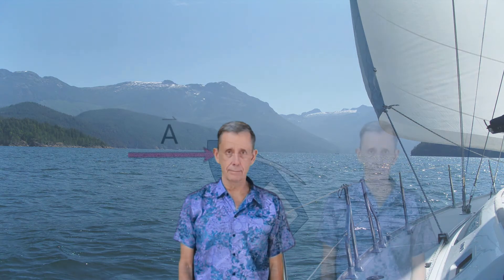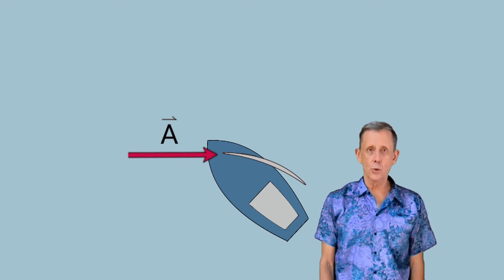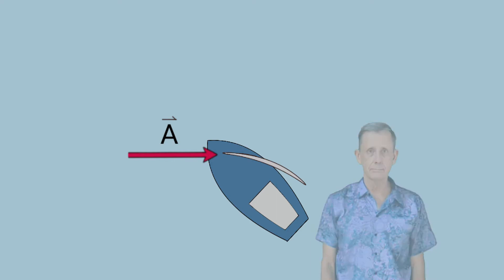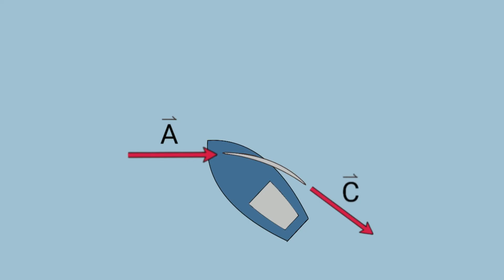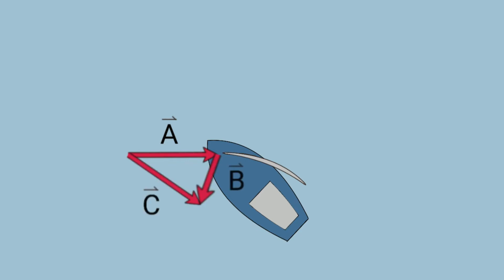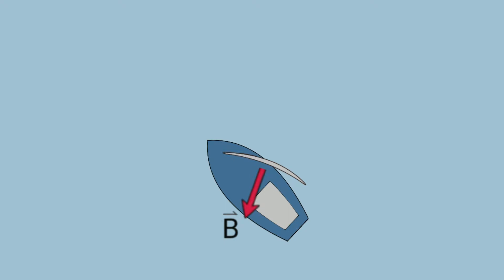We saw in the last lesson that lift, and drive in sails, comes from Newton's third law of motion — for every action, there's an equal and opposite reaction. Let's take a quick look at the vectors again. Looking down on the boat, here is the initial wind velocity vector A approaching the leading edge, or luff, of the sail. And here is the final deflected wind velocity vector C. So vector A plus a deflection vector B equals the final vector C. Vector B is the action in Newton's third law of motion, and the equal and opposite reaction is the force driving the sails and propelling your boat forward.